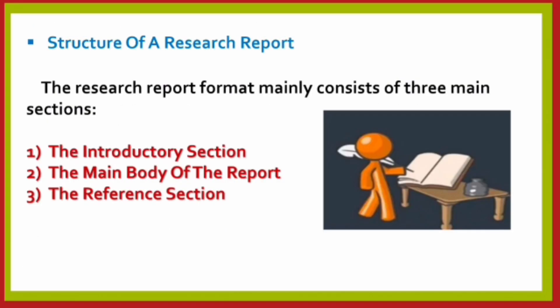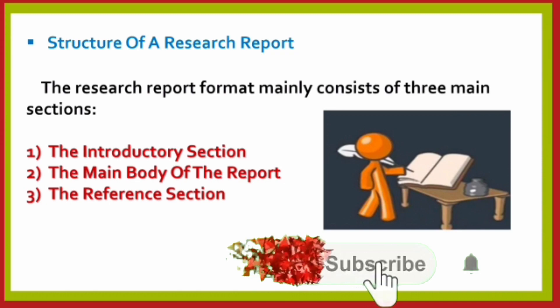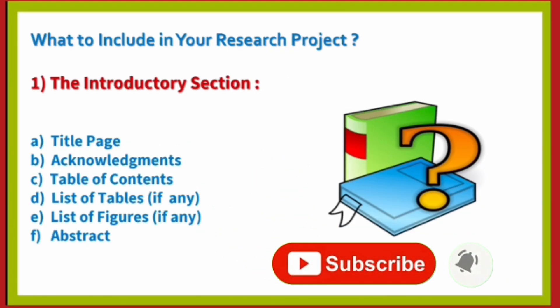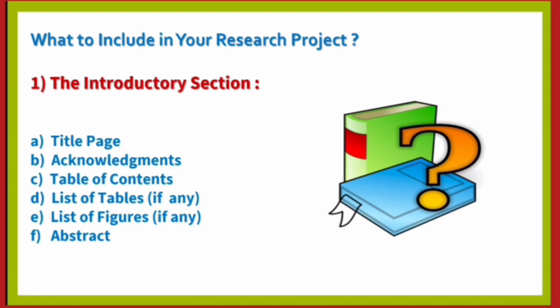The structure of a research report mainly consists of three main sections: the introductory section, the main body of the report, and the reference section. In the introductory section, the researcher includes the title page, acknowledgments, table of contents, list of tables if any, list of figures if any, and the abstract.